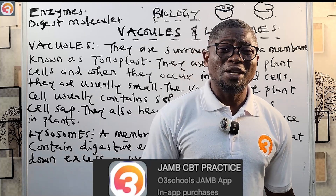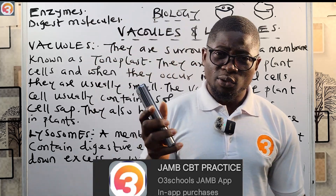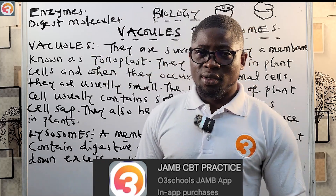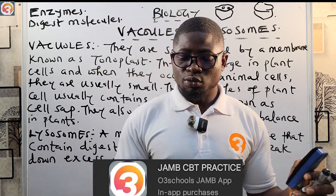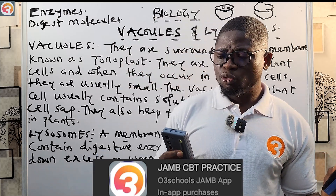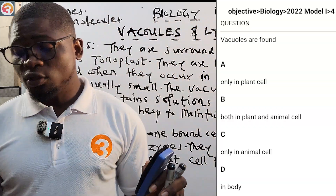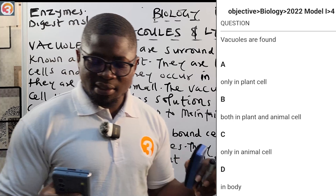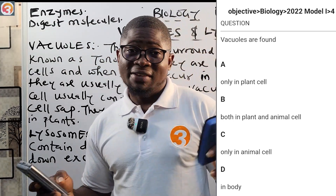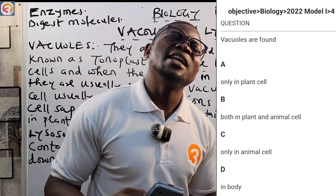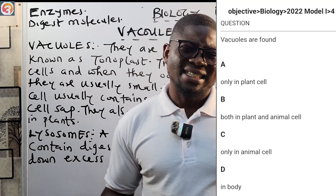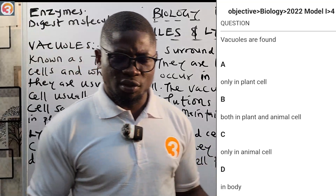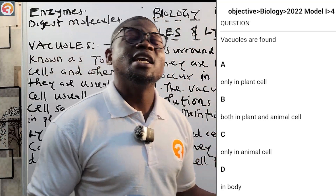Please go to the Play Store immediately and download the O3 School Jam app — it has been displayed on the screen right now with the logo. Now, the 2022 question number four: 'Vacuoles are found — A: only in plant cells, B: both in plant and animal cells, C: only in animal cells, D: in the body.' The answer is B — both in plant and animal cells. They are very predominant in plant cells like the central vacuole, but are also sparsely found in animal cells, scattered around the cytoplasm to store different substances.